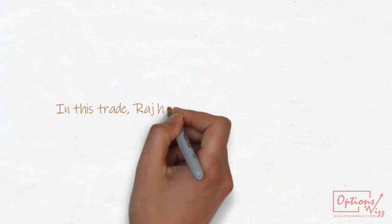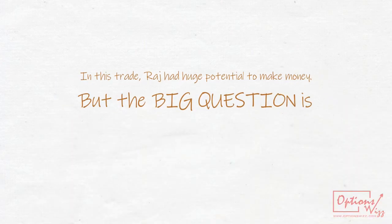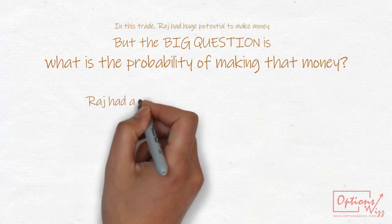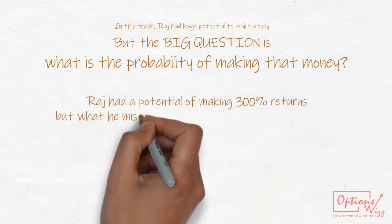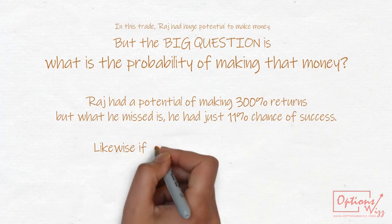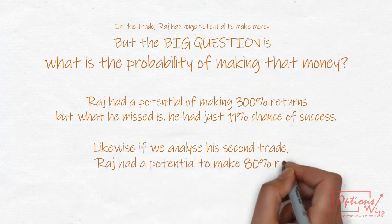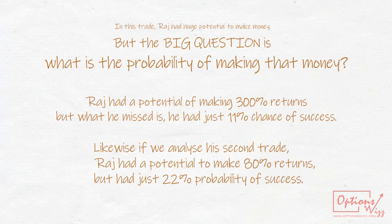In this trade, Raj had huge potential to make money. But the big question is, what is the probability of making that money? Raj had a potential of making 300% returns, but what he missed is he had just 11% chance of success. Likewise if we analyze his second trade, Raj had a potential to make 80% returns, but had just 22% probability of success.